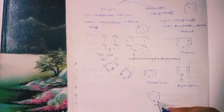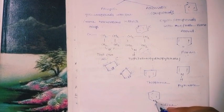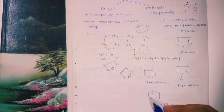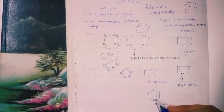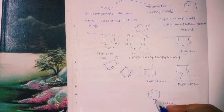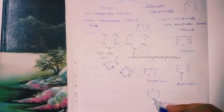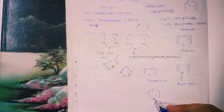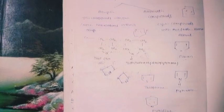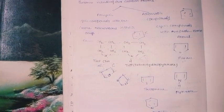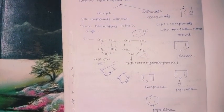Pyridine is a six-membered ring — similar to benzene — but with nitrogen at the first position. This completes the classification of organic compounds. Thank you.